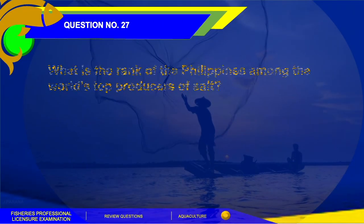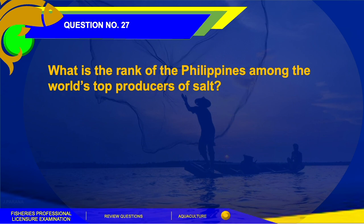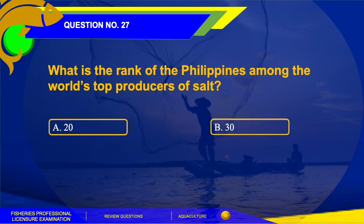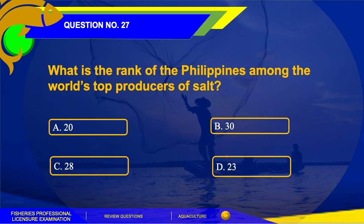Number 27. What is the rank of the Philippines among the world's top producers of salt? A. 20, B. 30, C. 28, or D. 23. The answer is letter C, 28. In 2012, the Philippines ranked 35th among top salt producers in the world, with 600,000 tons or 0.29% of the world's annual production. Currently, according to Bartolome et al. 2022, the Philippines ranked 28th among 91 countries in terms of salt production.